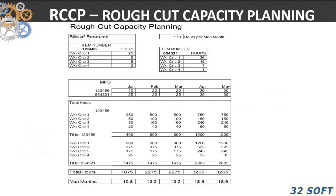Looking at a simple spreadsheet example: we've got part numbers one through six, with 173 hours of labor available. For each part's bill of resource across work centers one through four, the rough cut capacity planning calculation multiplies the MPS quantity by the resource hours. For instance, 25 times 10 gives 250 hours of load in one period, 500 in the next. Summing and dividing by 173 hours per person per month shows that for each month we'll need approximately 10.8 to 13 people, rising to almost 19 in April and May.